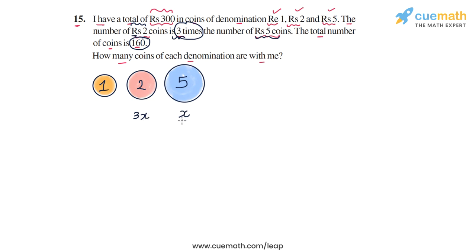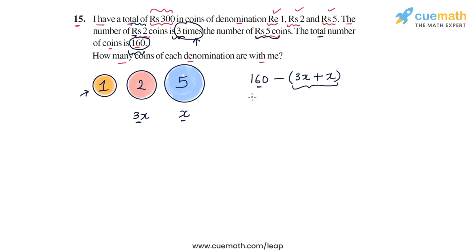The number of 5-rupee coins is assumed as x, so the number of 2-rupee coins is 3x, as given in the problem. The total number of coins is 160, so the number of 1-rupee coins can be written as 160 minus 3x minus x, which equals 160 minus 4x.